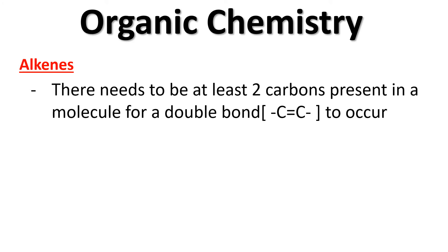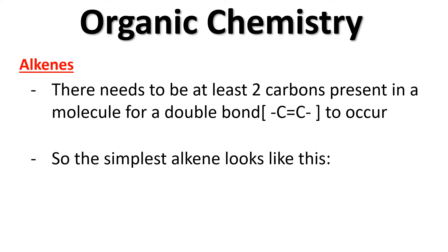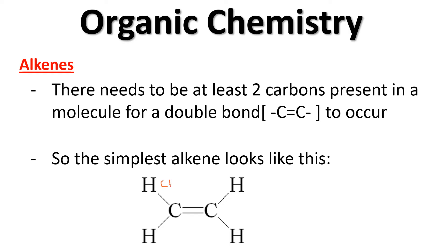Alkenes are unsaturated. There needs to be at least two carbons present in a molecule for a double bond to occur — meaning you can't have a double bond with methane, which has only one carbon. So our simplest alkene has two carbons bonded together with hydrogens on the ends.